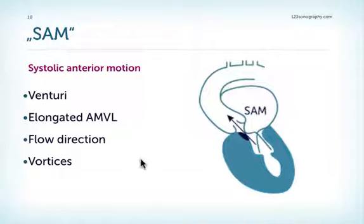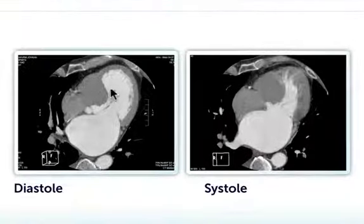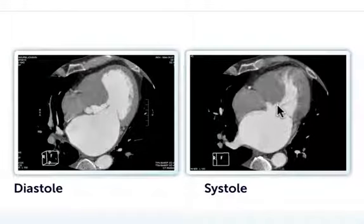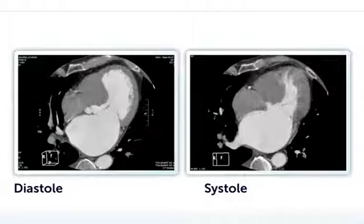Whatever the reason, the typical finding is obstruction of the LVOT caused by the mitral valve. This obstruction can even be seen with computed tomography — for example where there is massive left ventricular hypertrophy of the septum, the LVOT is very narrow during diastole, and during systole we have obstruction of the LVOT by the mitral valve and turbulent flow. Of course, CT is not the method of choice; you should be using echocardiography.